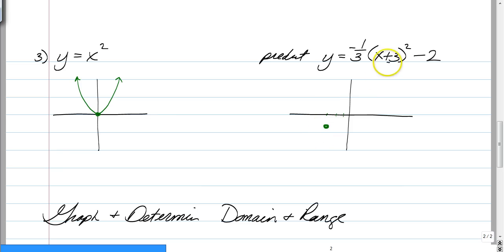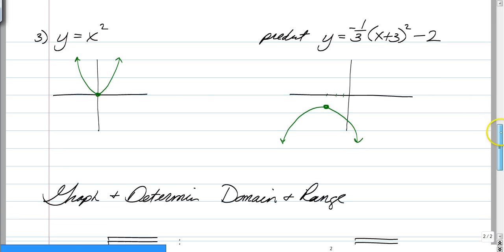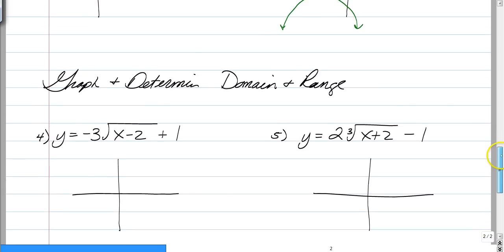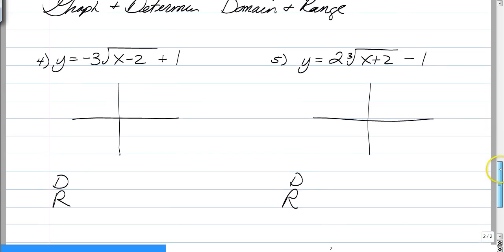move it to the left 3, and down 2. So we start left 3, down 2. It's going to open upside down, and we're going to squish it. So when you squish it, the parabola is going to get much wider. That's it. That's all we're doing here is using what we know about graphs to predict what these graphs are going to look like.